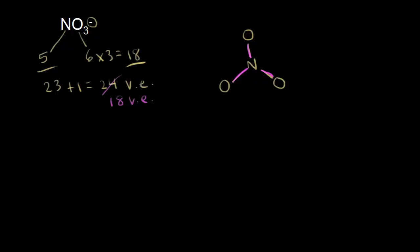Oxygen is going to follow the octet rule. Currently each oxygen has two valence electrons around it. So if each oxygen has two, each oxygen needs six more to complete the octet. I go ahead and put six more valence electrons on each one of my oxygens. Now each oxygen is surrounded by eight electrons. We added a total of six valence electrons to three oxygens, so 6 times 3 is 18. We've used up all of the electrons that we need to represent.